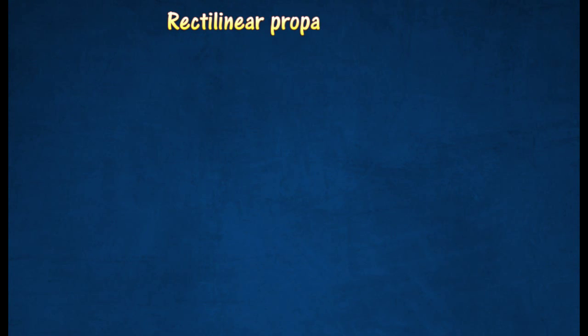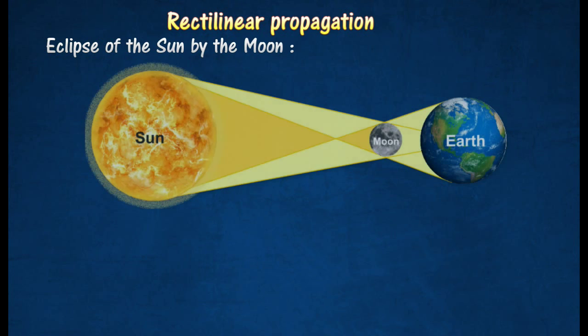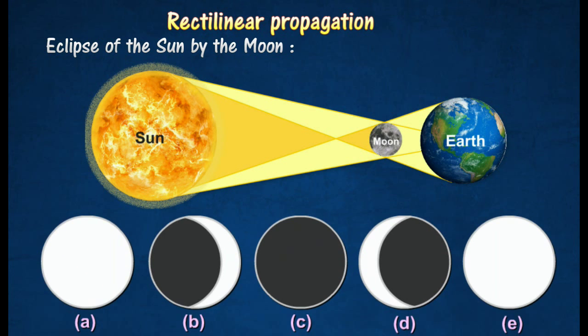The rectilinear propagation of light causes the formation of sharp shadows and eclipses due to opaque objects placed in the path of a light beam. The diagram shows the eclipse of the sun by the moon and appearance of the sun from Earth.